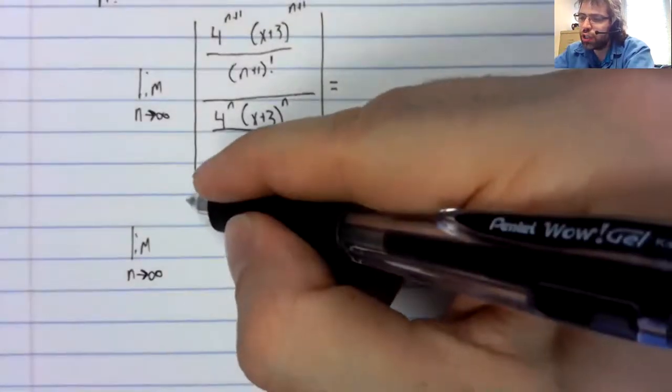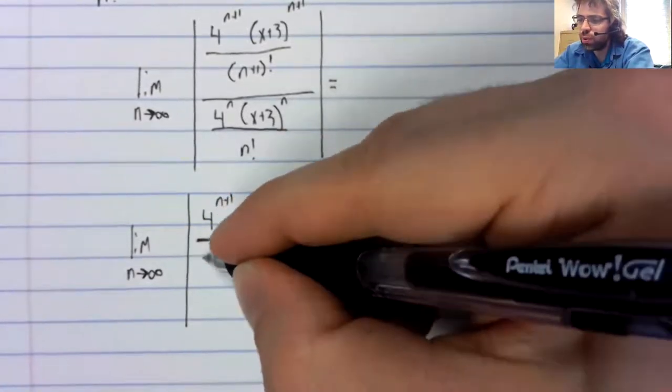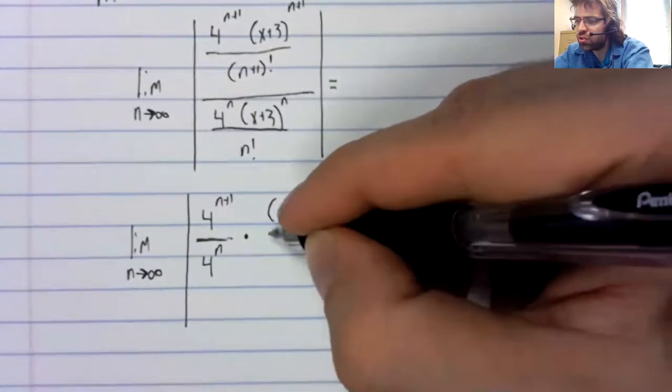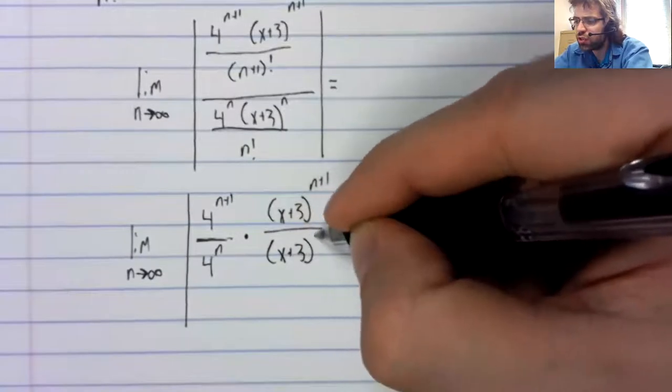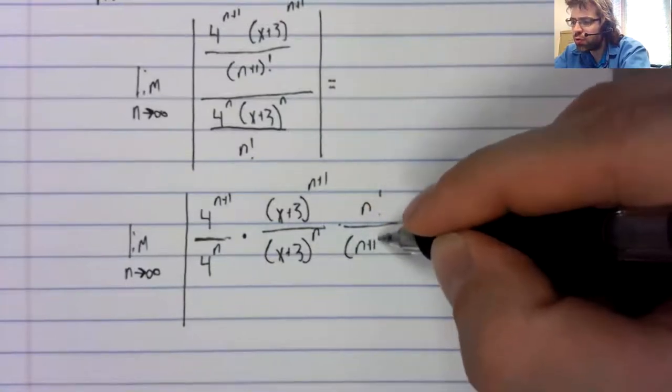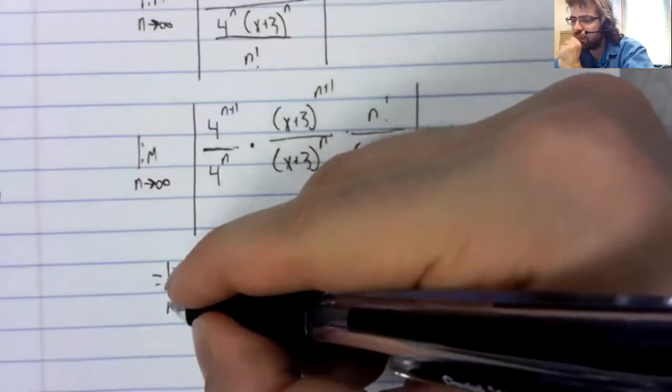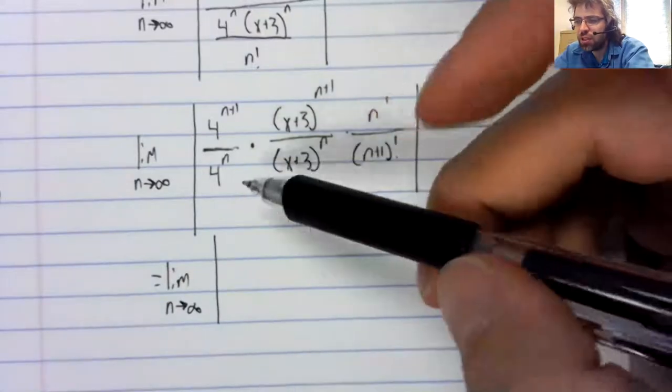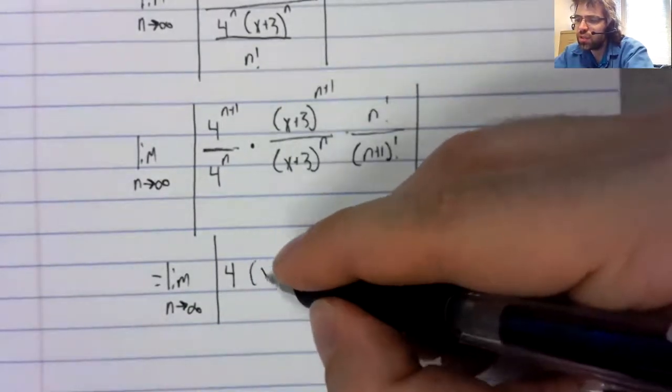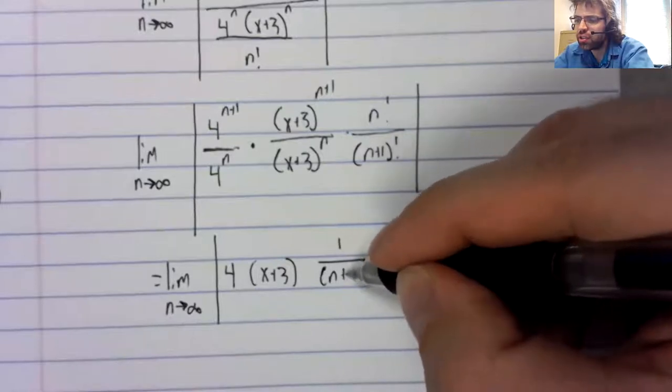So if we rewrite this and we align our terms, let's look at the numbers: 4 to the n plus 1 over 4 to the n, X plus 3 to the n plus 1 over X plus 3 to the n, n factorial over n plus 1 factorial. This is 4, this is x plus 3, this is 1 over n plus 1.